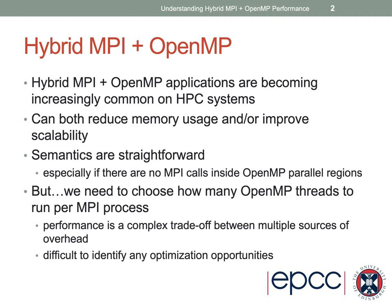Hybrid MPI plus OpenMP applications are becoming increasingly common on high-performance computing systems. Compared to pure MPI, they can both reduce memory usage and improve scalability. The semantics of combining MPI and OpenMP are quite straightforward, especially when there are no MPI calls inside OpenMP parallel regions. However, we need to choose how many OpenMP threads to run per MPI process, and performance involves complex tradeoffs with multiple sources of overhead, making optimization opportunities difficult to identify.